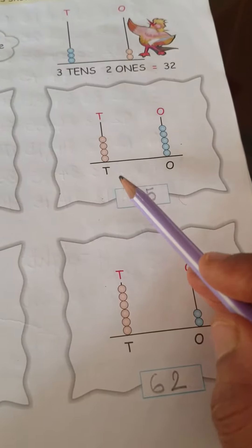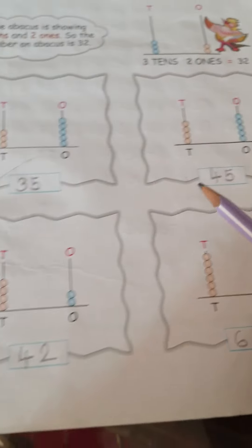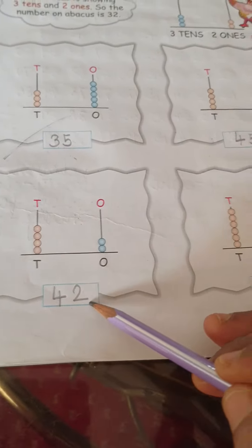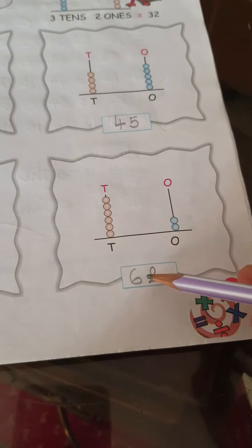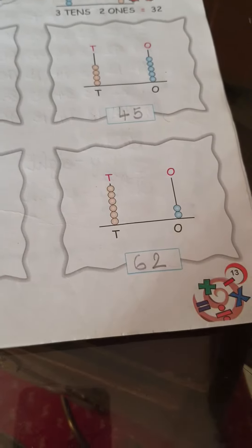Then again count here, number is 45. Then the third one, number is 42. Then the fourth one, number is 62. Go to next page.